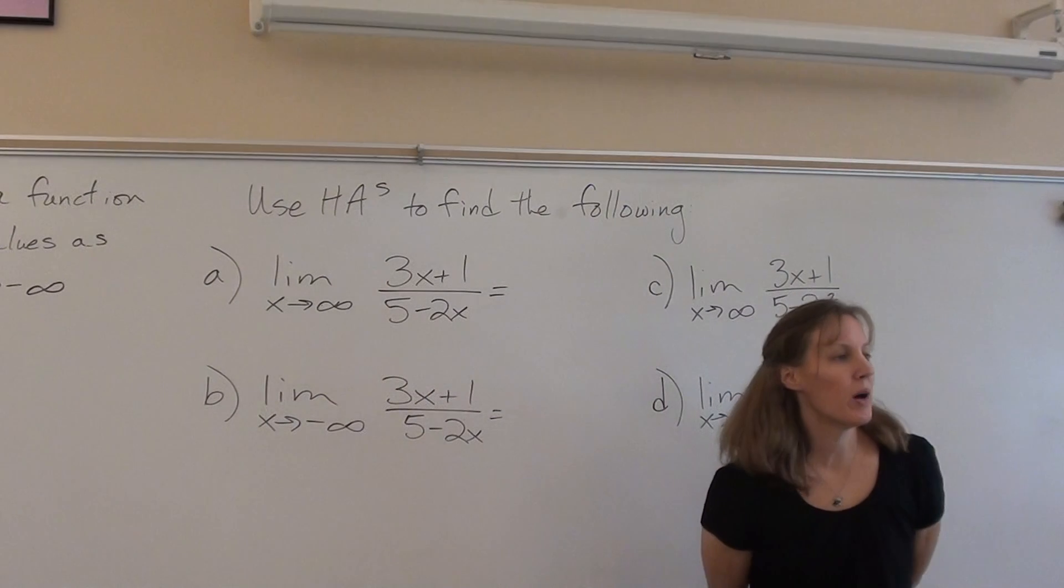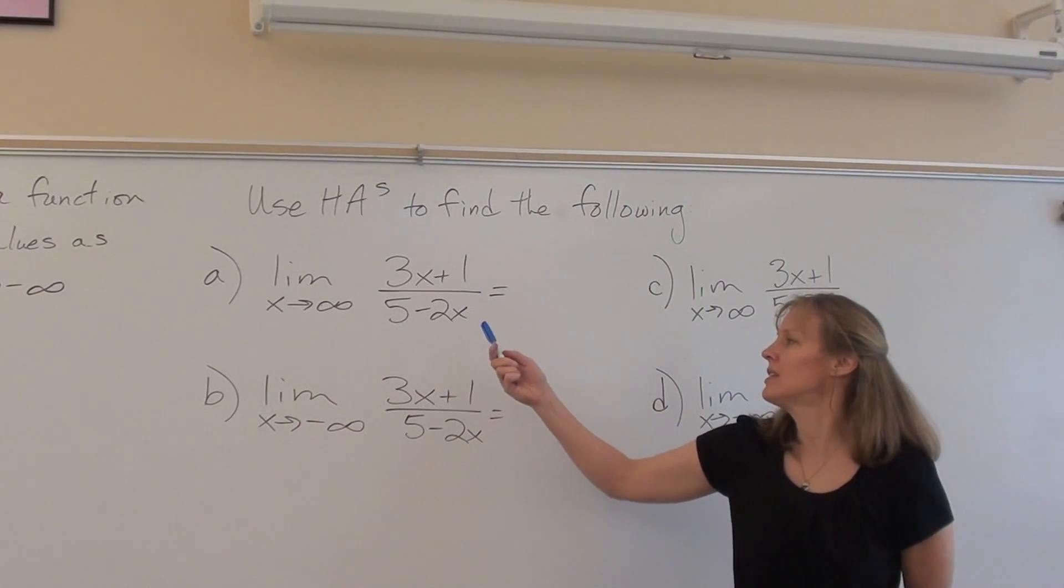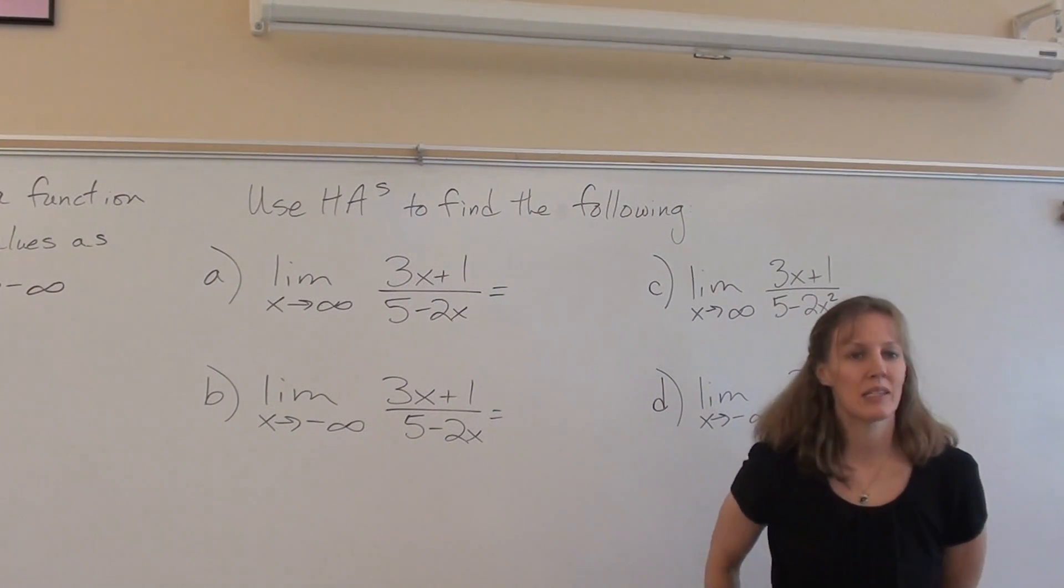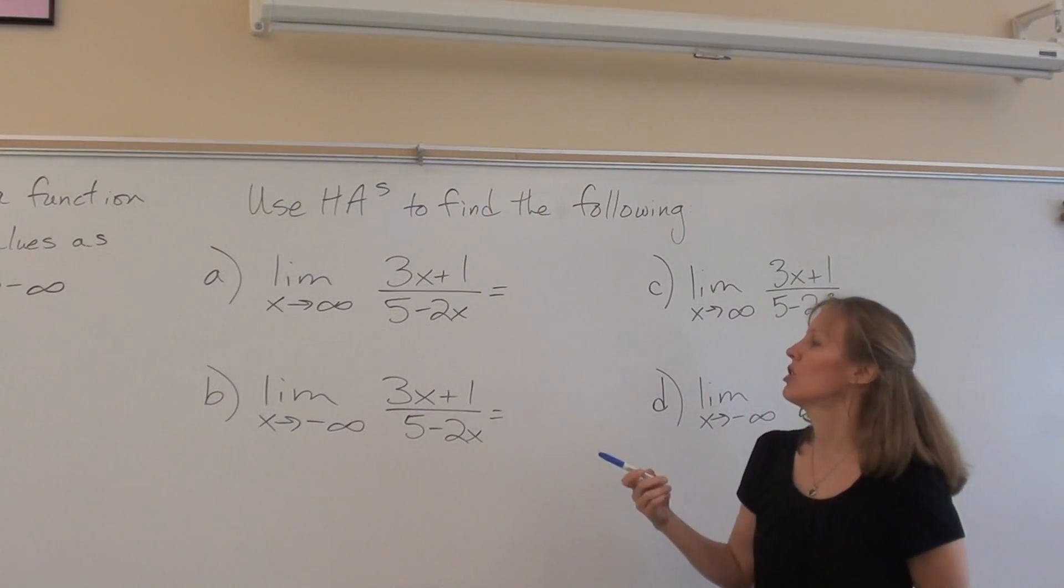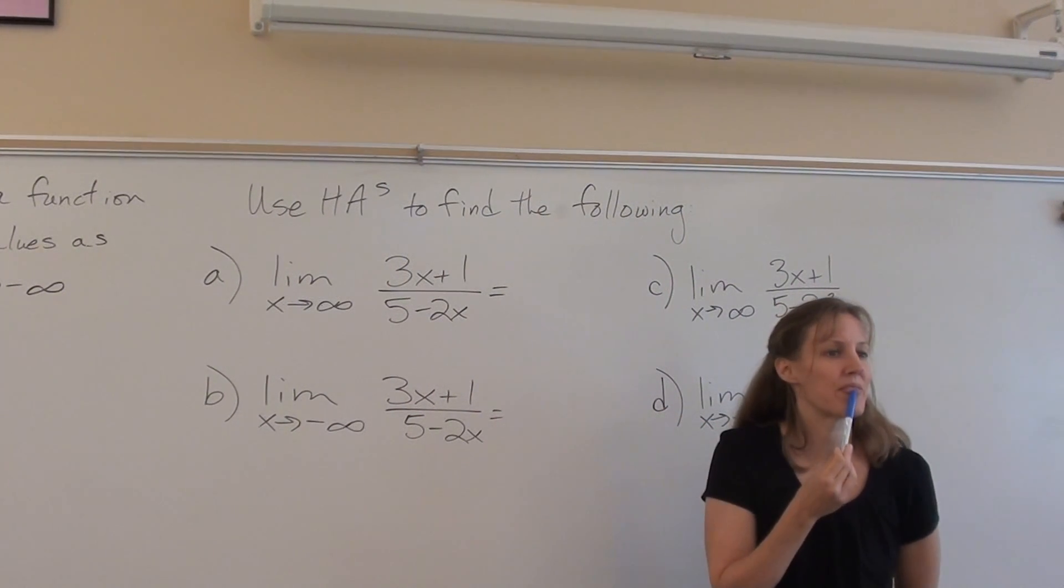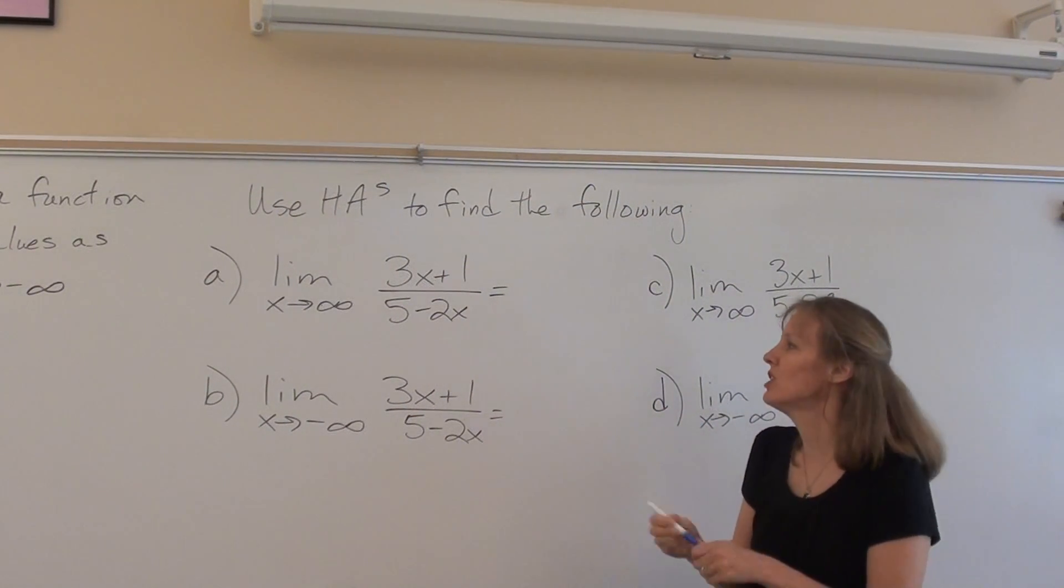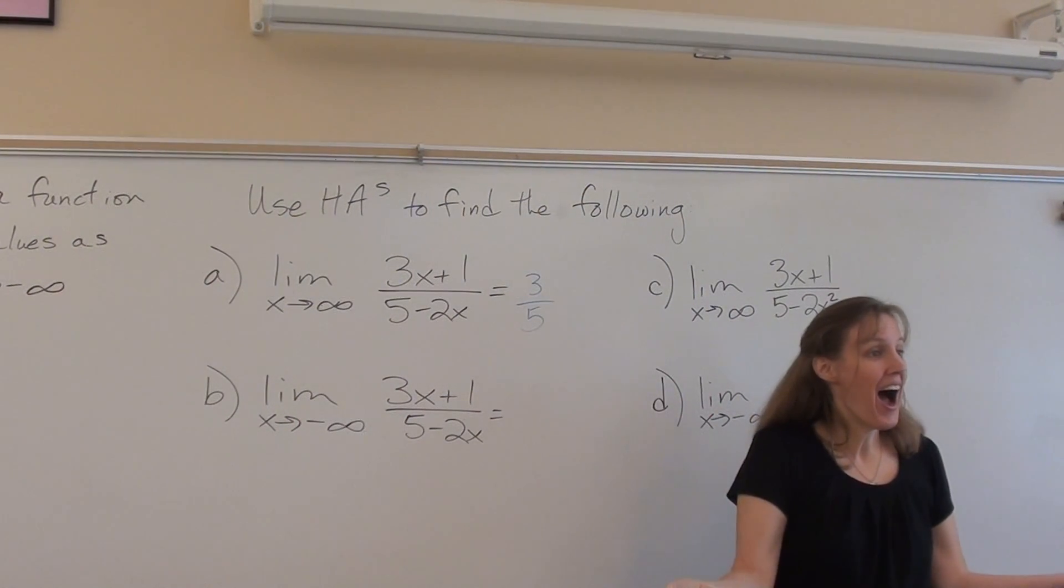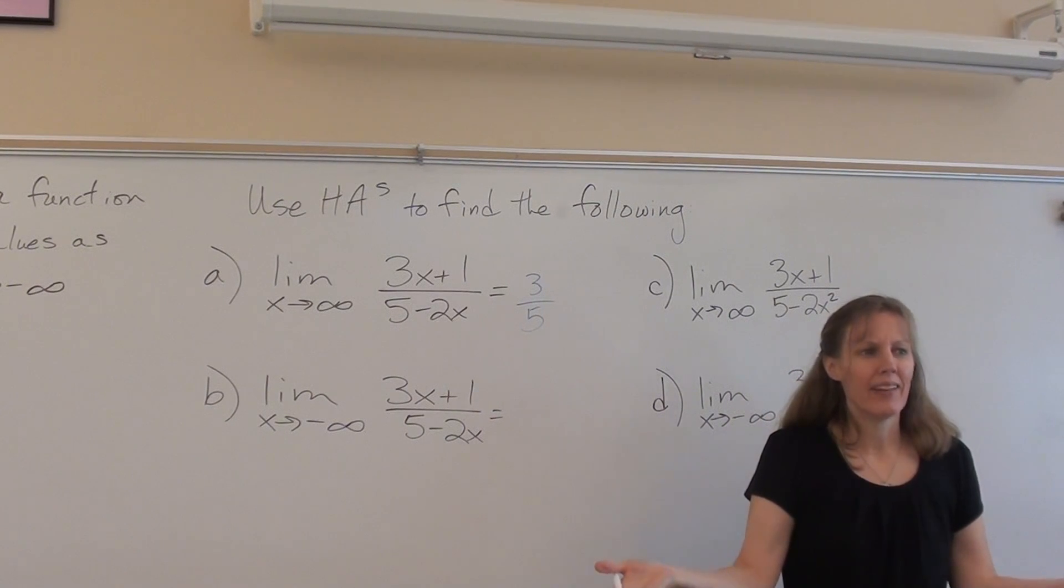So for the first one, are the degrees, is the top bigger? Are they the same or is the bottom bigger? They're the same, right? It's the exponents we're looking at. So the degrees are the same. So how do we find the horizontal asymptote? Divide the leading coefficients. Negative 3 over 2.